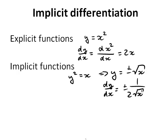But what if we can't rewrite an implicit function as an explicit function? In that case, implicit differentiation will help. Rather than giving you a more difficult example, I will start with this one: y squared is equal to x.